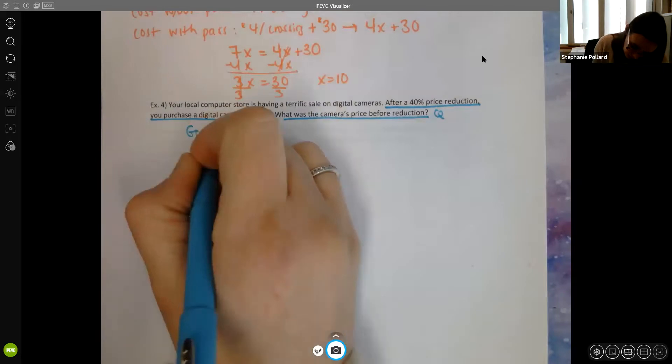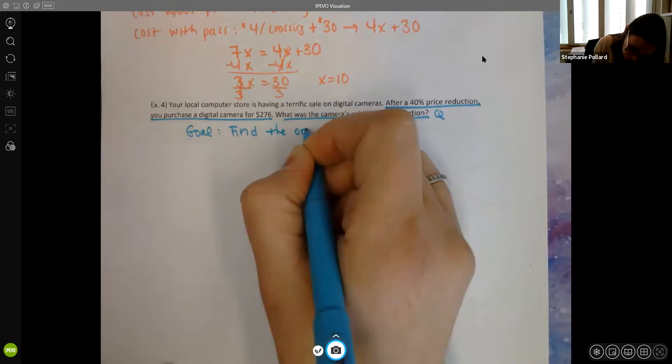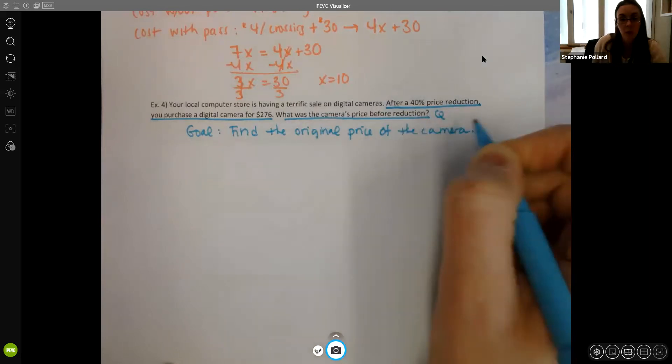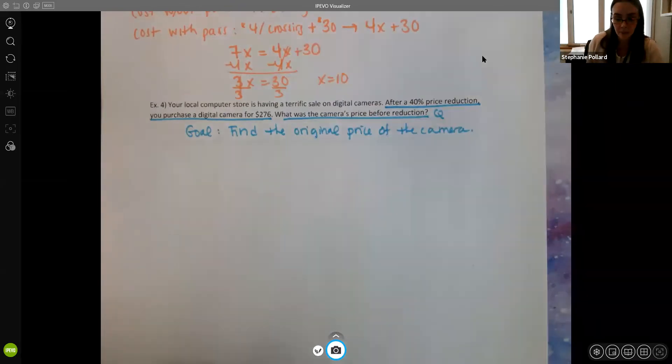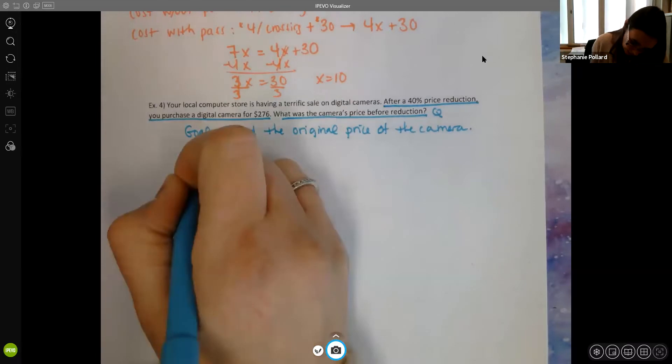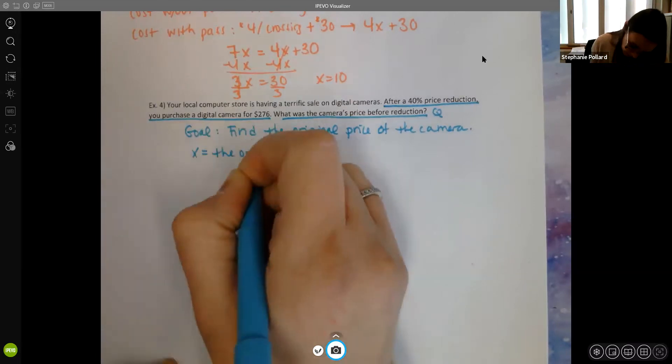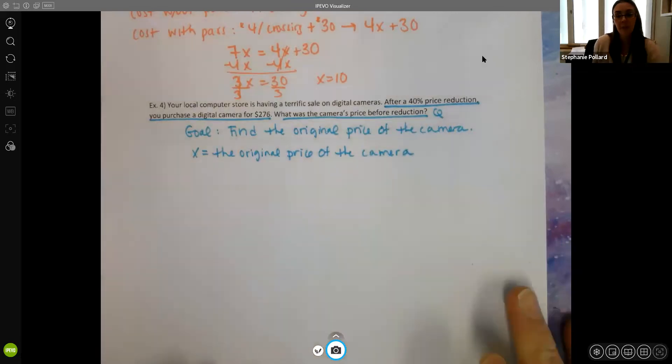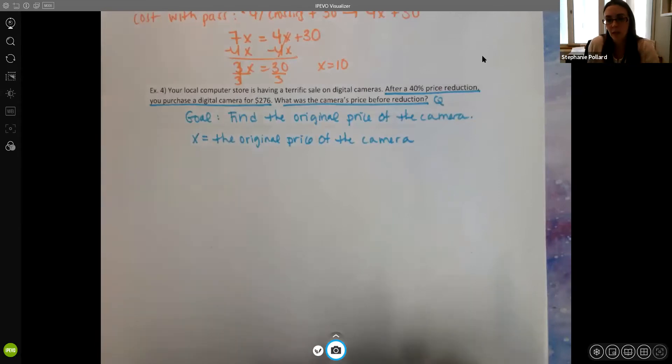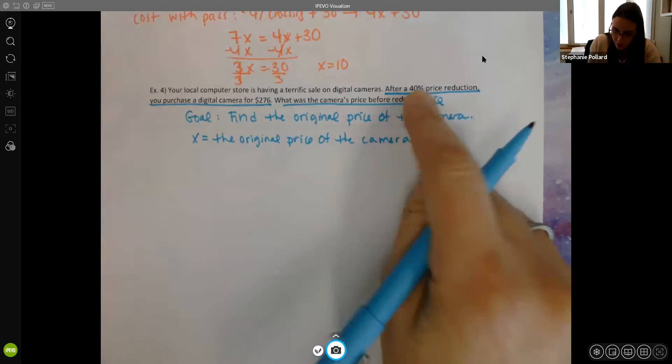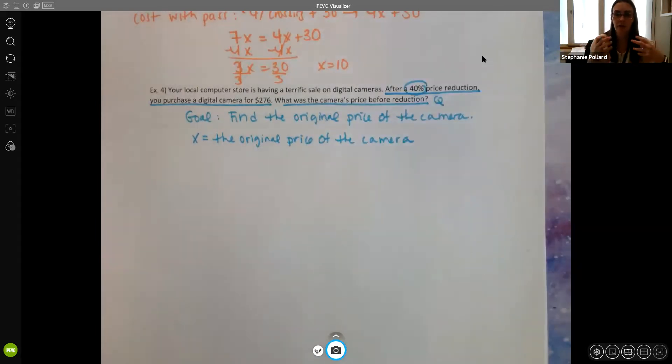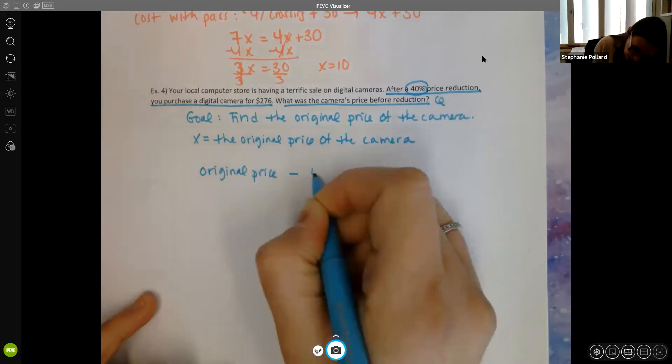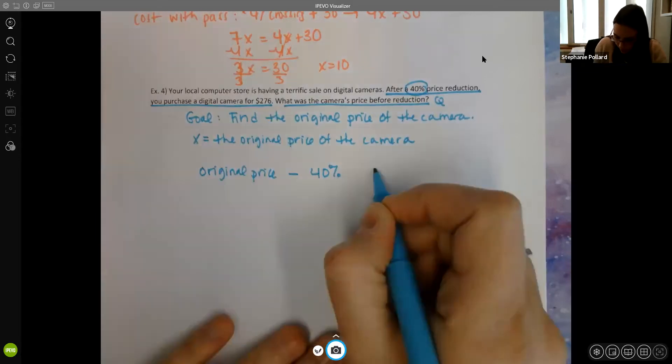So our goal here is to find the original price of the camera. So we want to know the price before reduction. So what was the original price before it went on sale? Now, I only have one unknown here. So we're going to let X equal the original price. Now think about what's going on here. When you go shopping, when you have a discount, so that 40% reduction comes off the original price. So they take the original price, and they take the 40% off the original price. So what we see is that you have the original price minus this 40%. And that's going to equal the new price of $276.